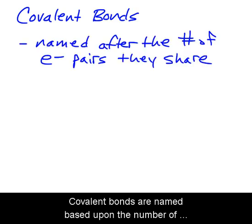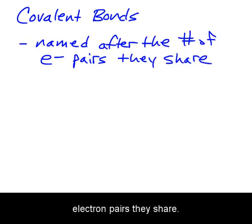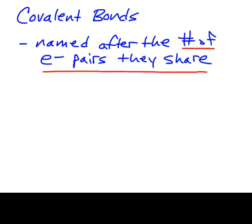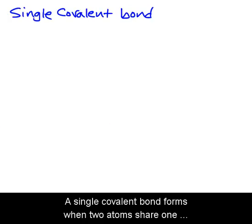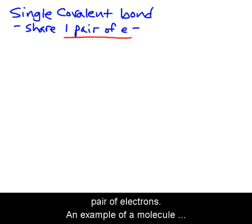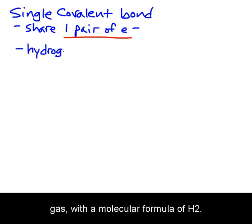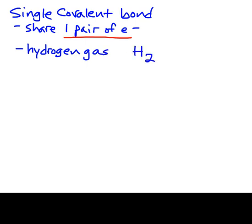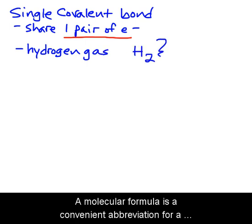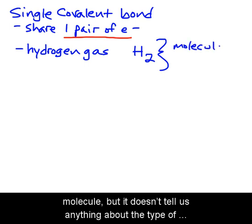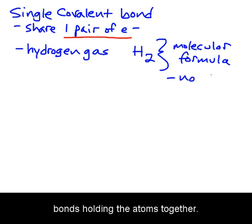Covalent bonds are named based upon the number of electron pairs they share. A single covalent bond forms when two atoms share one pair of electrons. An example of a molecule held together by a single covalent bond is hydrogen gas, with the molecular formula H2. A molecular formula is a convenient abbreviation for a molecule, but it doesn't tell us anything about the type of bonds holding the atoms together.